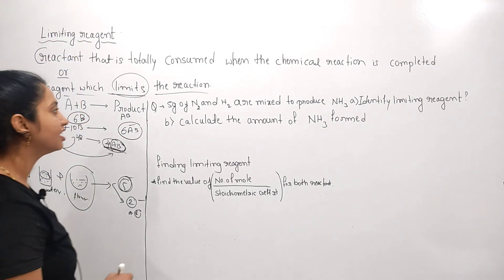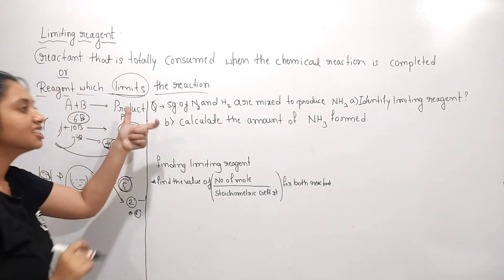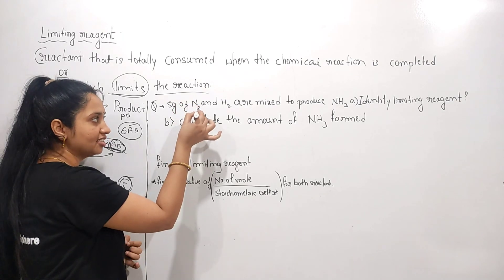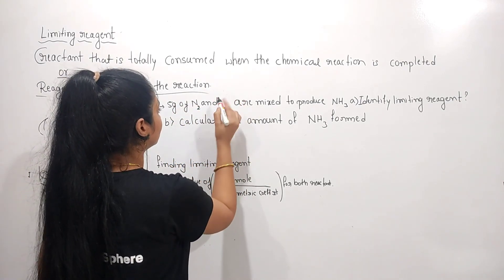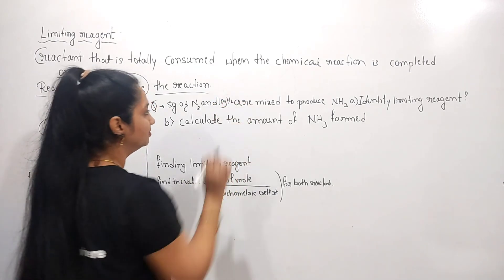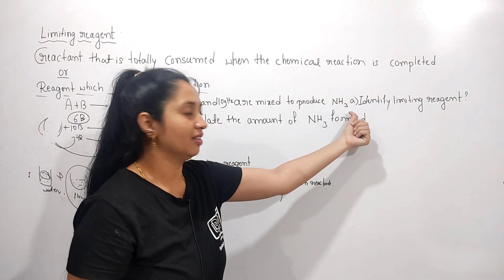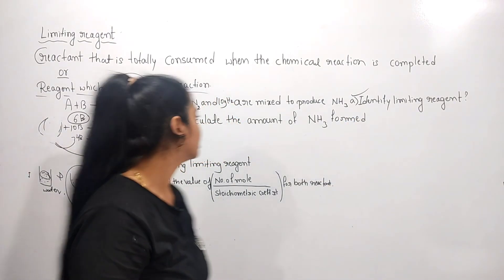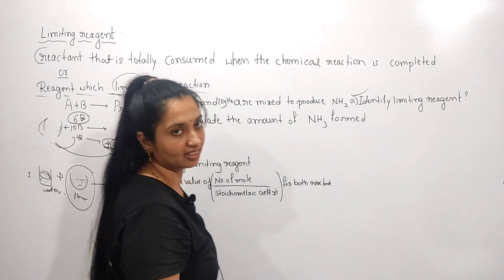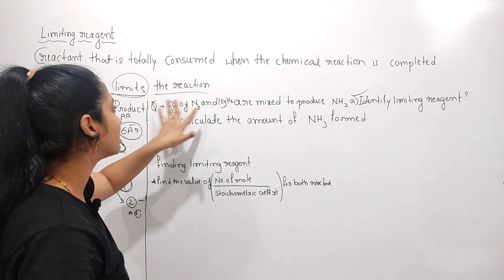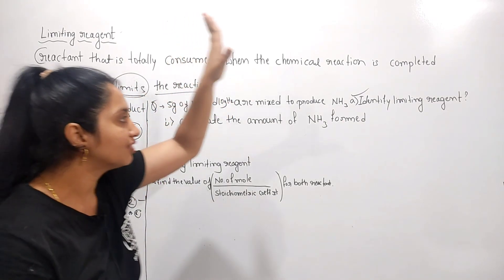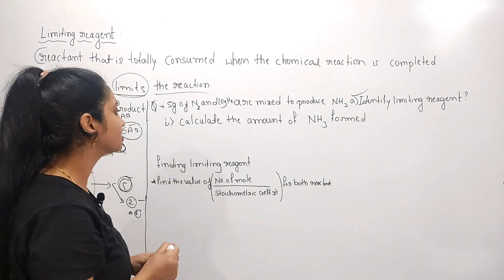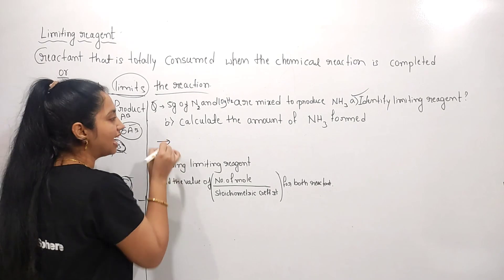Now let's see what type of problems are asked about limiting reagents. I'll take one problem to give you an idea. The problem is: 5 grams of nitrogen and 10 grams of hydrogen are mixed to produce ammonia NH₃. They ask us to identify the limiting reagent and calculate the amount of ammonia formed. First, we have to write a balanced chemical equation.